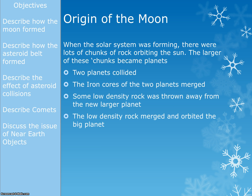So let's start with the origins of the Moon. When the Solar System was forming, there were loads and loads of chunks of rock orbiting the Sun, because the Sun and the Solar System all formed from one big cloud of dust. Most of it went into the Sun, and the little bits that didn't quite go in got pulled together by gravity to form the planets. And there were two of these chunks which were quite close together, and they became planets.